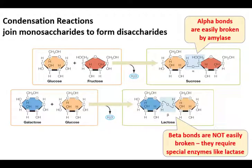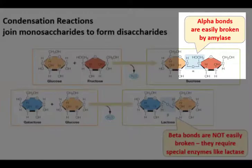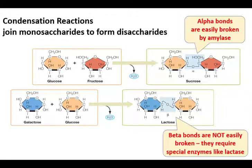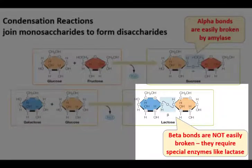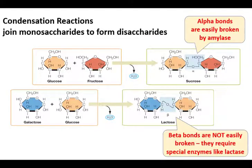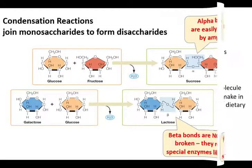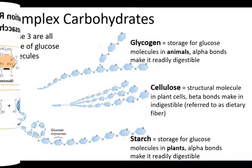Look closer at that chemical bond. We can make an alpha-glycosidic bond, which our catabolic enzymes easily break down — we just add the water molecule back in, in a process called hydrolysis. Or, we can make a bond called a beta-glycosidic bond. These bonds are much harder for us to break down.